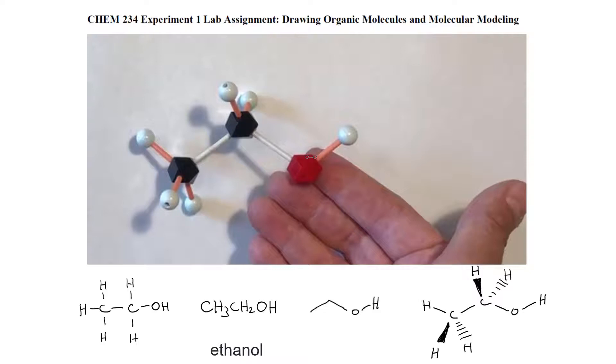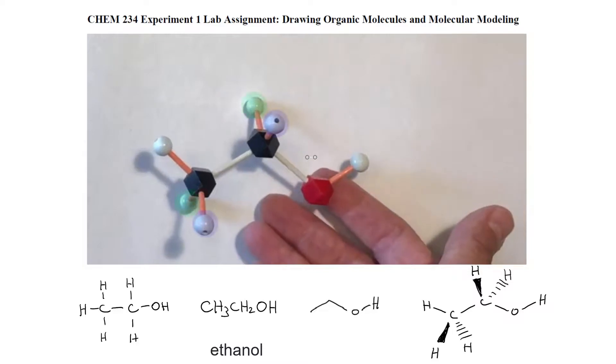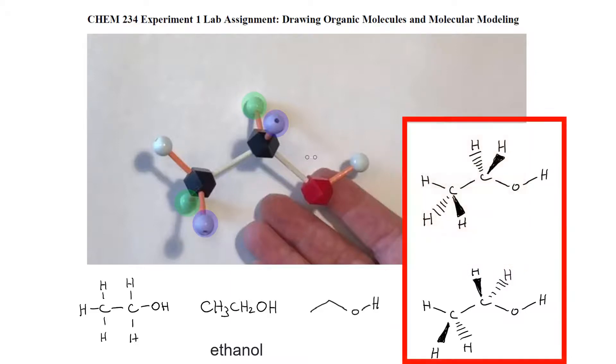Now I'll rotate the molecule slightly to change the perspective. Notice how the positions of the up and down-pointing hydrogens change slightly. Now the up hydrogens lean to the right and the down-pointing hydrogens lean to the left. I've drawn in this alternative perspective where the dashes and the wedges are just flipped. This representation is equivalent to the one below. Both structures represent the same molecule, just viewed from different perspectives.